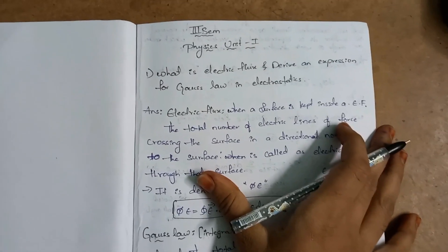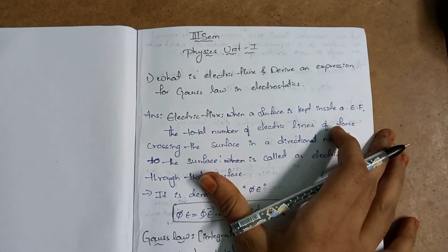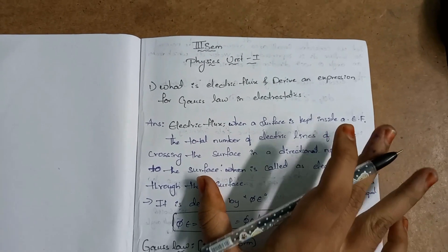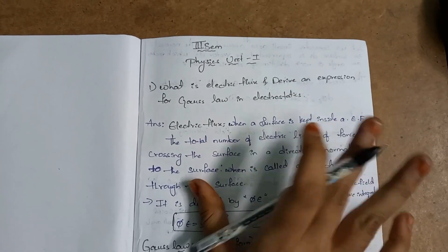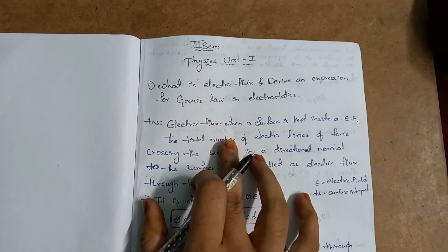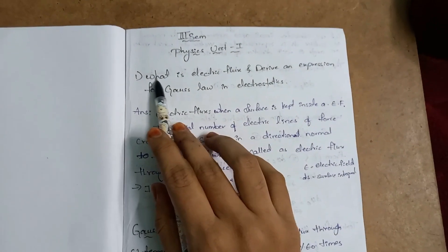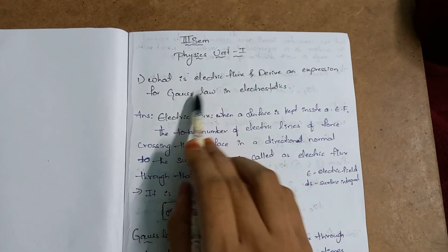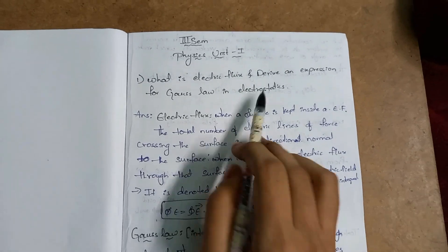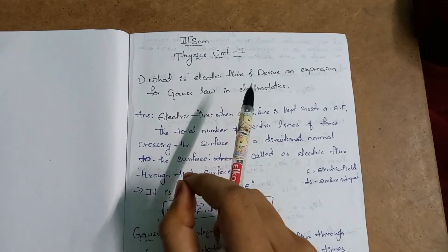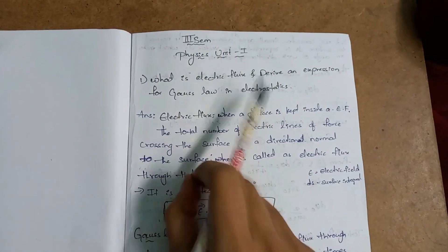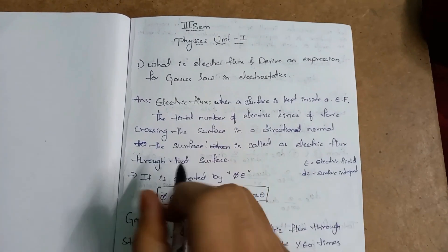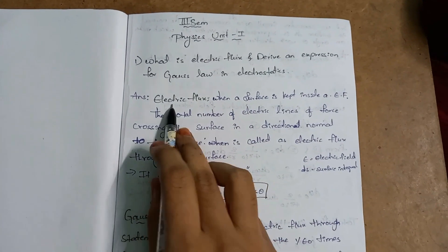Hi guys, welcome back to our channel. This is my third semester in physics. We discussed the main important topics in the first unit of physics. Now we will discuss what is electric flux and derive an expression for Gauss's law in electrostatics, which is the first topic in the first unit of physics.